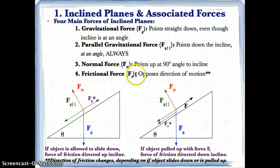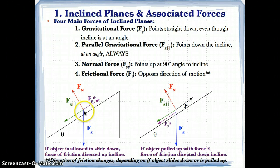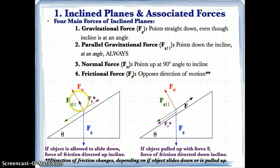The normal force always points at a 90 degree angle to the incline. Since the incline is at an angle, Fn is not pointing straight — rather it's pointing at an angle so that it's going 90 degrees to the surface. Think of this as a horizontal: if you slightly tilt your head, you can see Fn is going at a 90 degree angle.